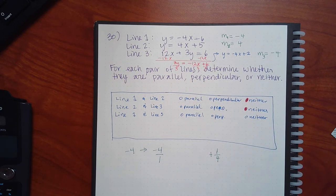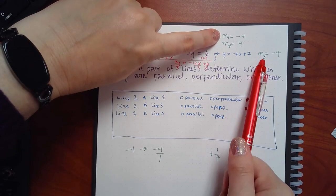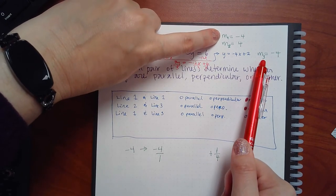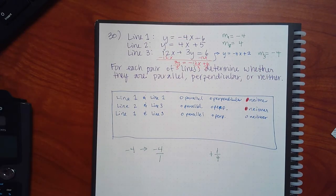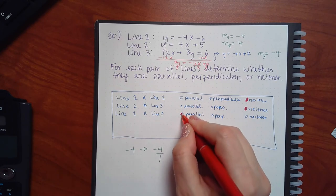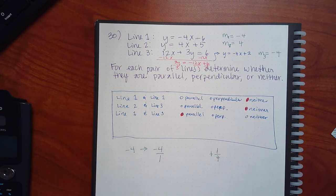Lines two and three: not the same, and not perpendicular — you'd need 1/4 for perpendicular. So those are also neither. Lines one and three: both are negative 4 — those are parallel. Once you find a match, you don't need to go through the others for that pairing.